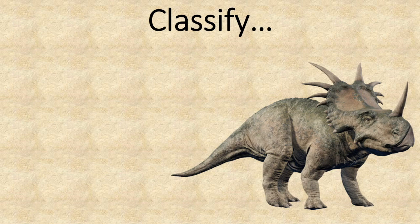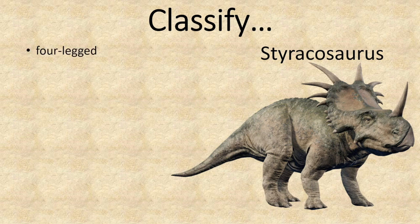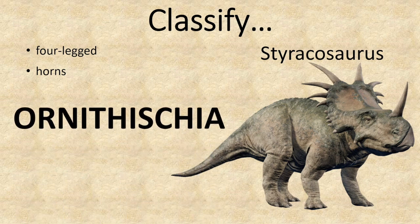Next up, we have a dinosaur with some features that might provide clues as to which subgroup it falls into. This is a Styrachosaurus — it's four-legged and it has horns. It's in the Ornithischia group, and thinking back to the subgroups, dinosaurs with horns fall into the Cerepods group.